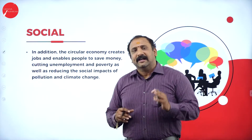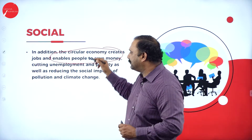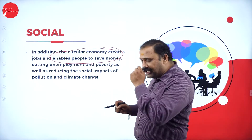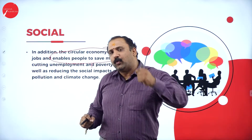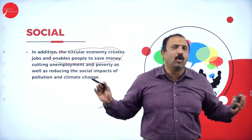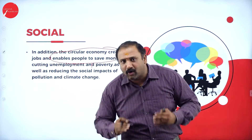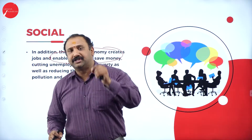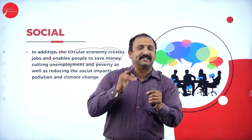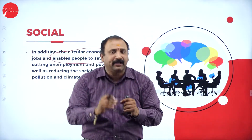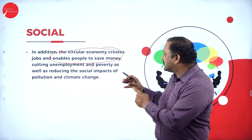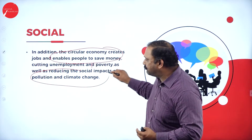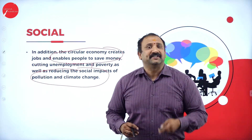Followed by the social part — the circular economy creates jobs and enables people to save money, cutting unemployment and poverty, which is a key area of the sustainable development goals. We don't want the unemployment wave to hit the earth again, nor poverty-stricken areas to grow wide and vast. We want depletion of poverty and unemployment, and a sustainable earth where everybody is able to make a potential earning from skill-based jobs that give long-run value. The circular economy can create a very valuable impact in the long run, taking care of pollution and climate change for a better sustainable future.